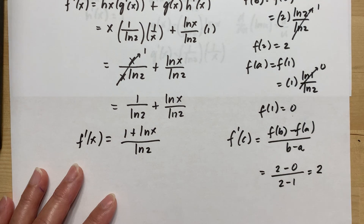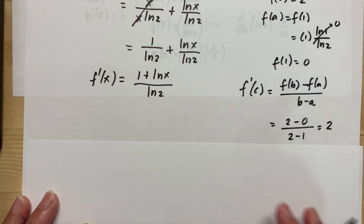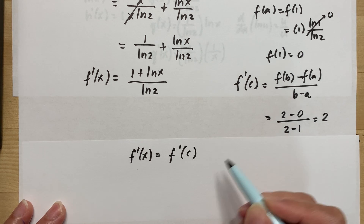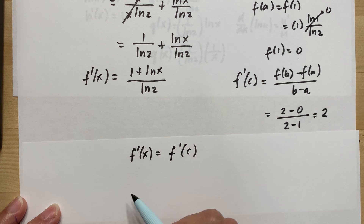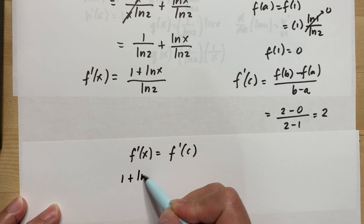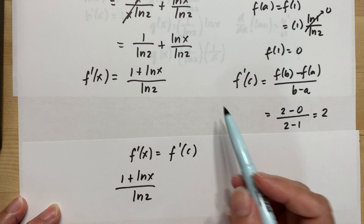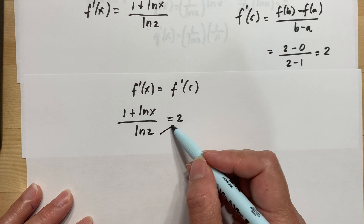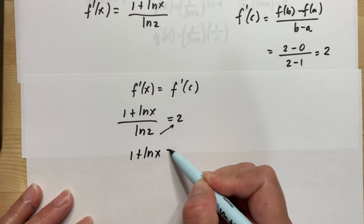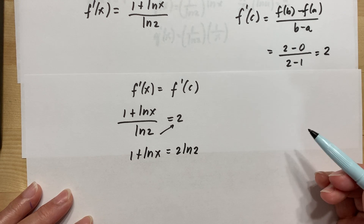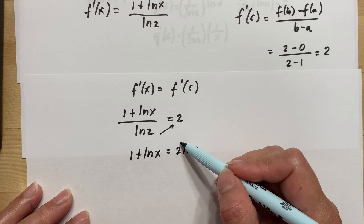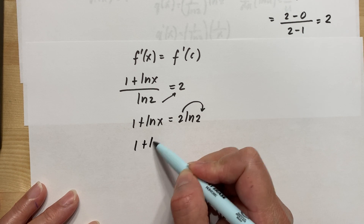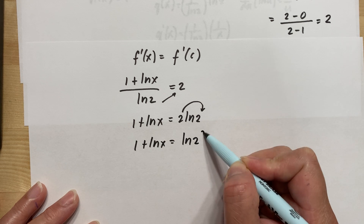Now we equate our derivative of the function to the derivative at point C to find C. So f′(x) = 1 + ln(x)/ln(2) = 2. Cross-multiplying gives 1 + ln(x) = 2·ln(2). Using the logarithm property that a coefficient becomes an exponent, 2·ln(2) = ln(2²) = ln(4).